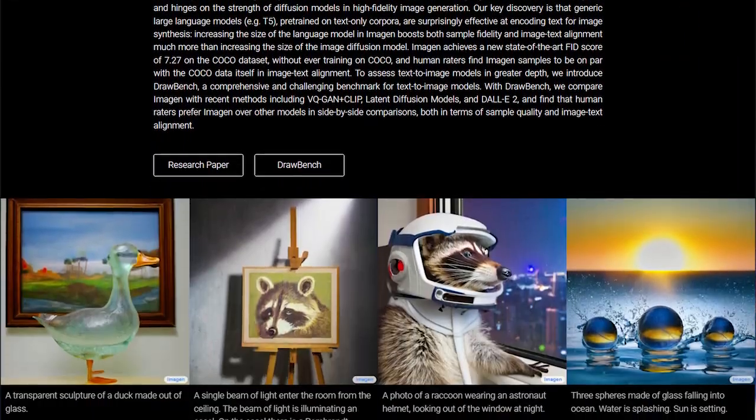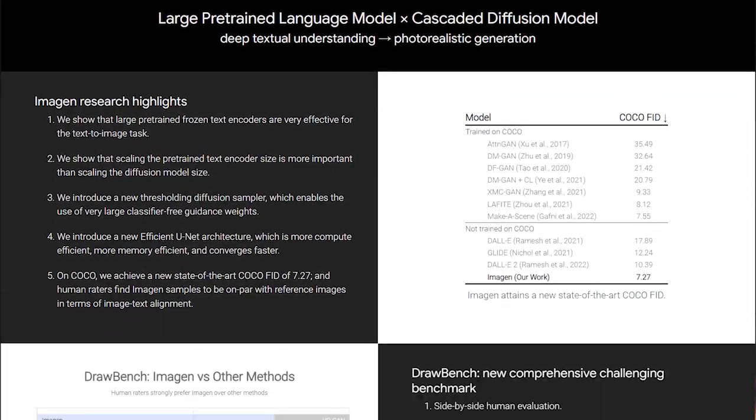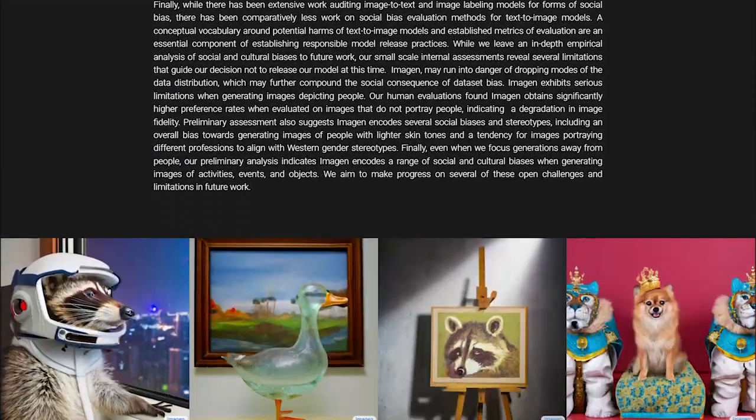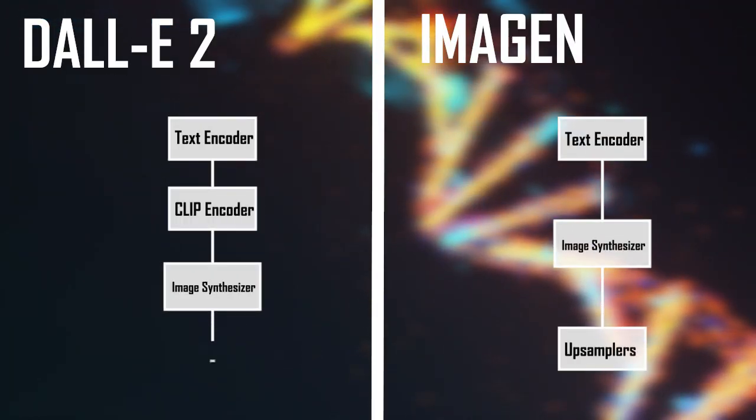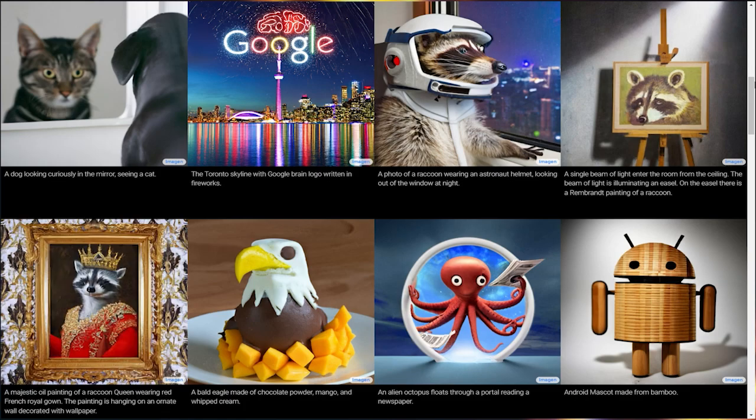This AI model, known as Imagen, builds on the power of a transformer language model to encode the prompted text into a sequence of embeddings and a text-conditioned diffusion synthesizer to generate photorealistic images. Combining these two model families and consisting of a simpler system structure than DALL-E2, Imagen bears the ability to generate much higher quality images than any other system.